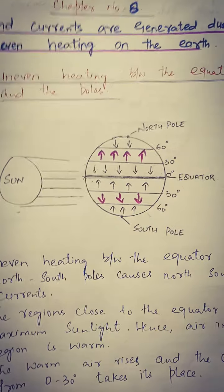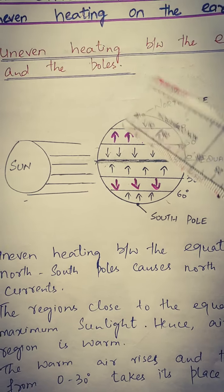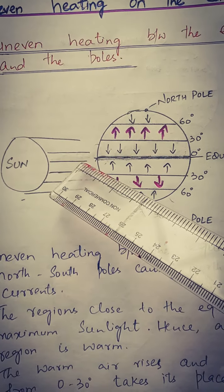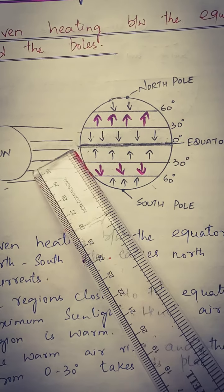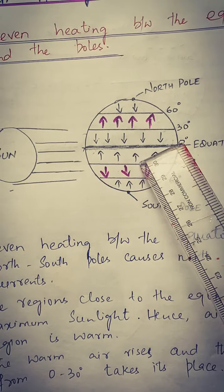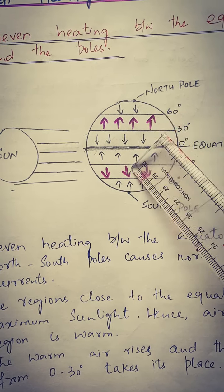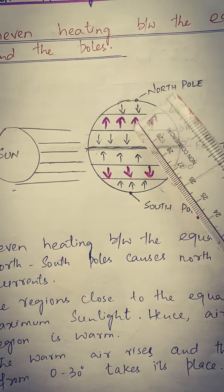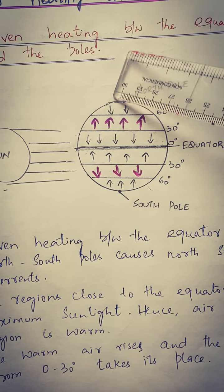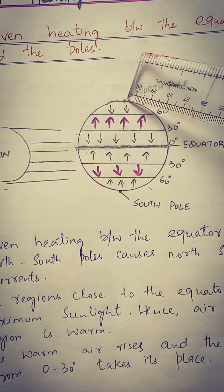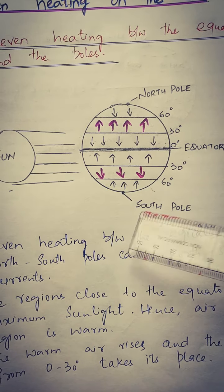You all know that our earth is a sphere in shape. There is an imaginary line which we call the equator, which divides the earth into two equal halves. And the poles of the earth — we call the upper pole the north pole, and the lower pole the south pole.